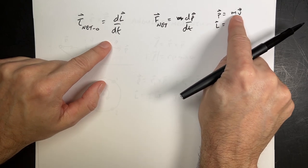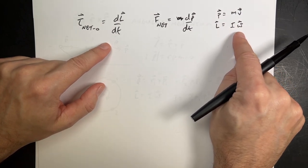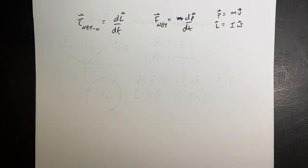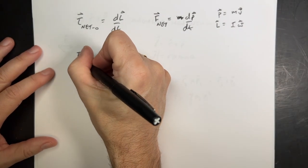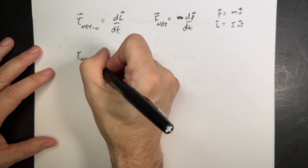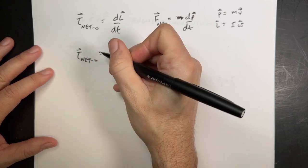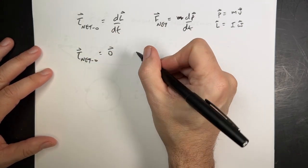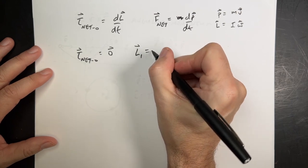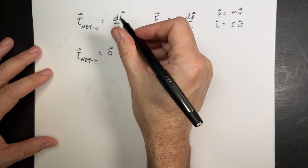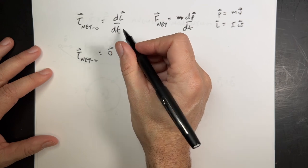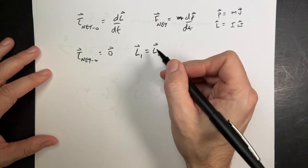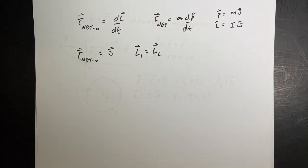Now, if you have a situation where the net torque is zero, zero vector, then L1 equals L2. Because if DL DT is zero, then L is constant. So the angular momentum is constant. And that's conservation of angular momentum.